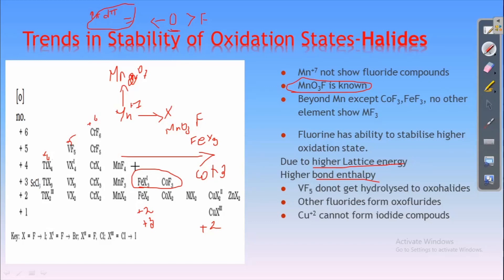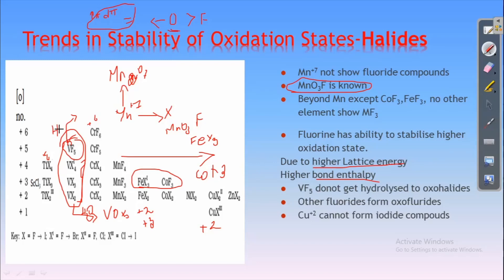The next point is about vanadium fluoride compounds. All vanadium halides — except vanadium in the +5 state — will hydrolyze to form vanadium oxohalide. But vanadium pentafluoride will not hydrolyze to form an oxohalide; instead, it will hydrolyze into its respective oxide. Because of this formation of oxide, it will not form an oxohalide.